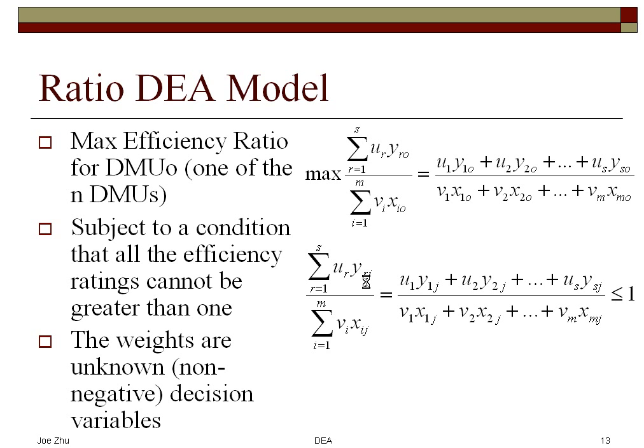When you evaluate other DMUs, you would replace the objective with a new DMU and it's subject to the same condition. So here again, for each DMU or each unit, you would run this model. So if you have N units, you're going to run this model N times and each time you're going to try to find out a set of weights that maximize the efficiency.